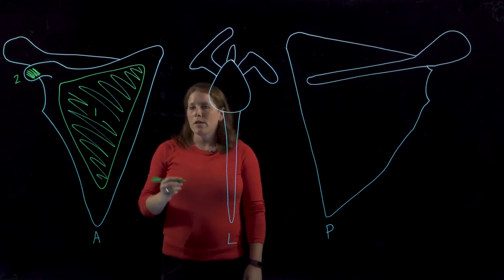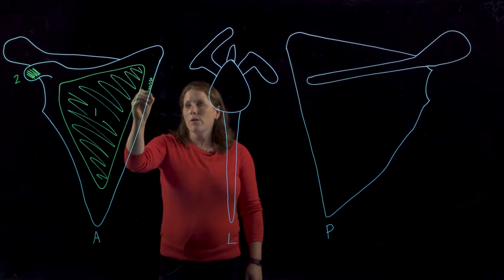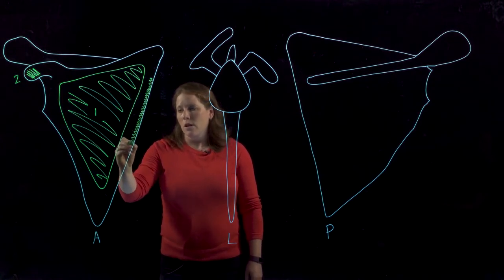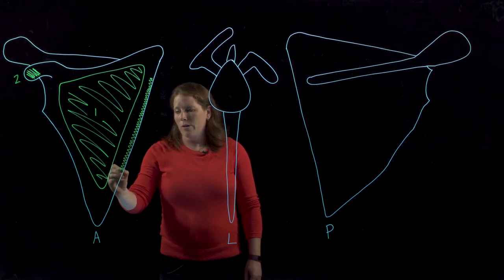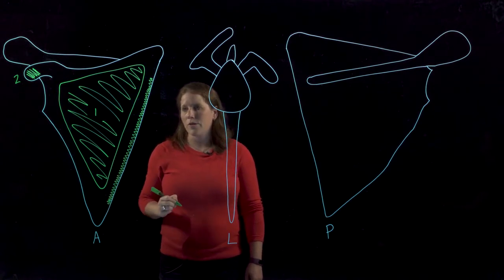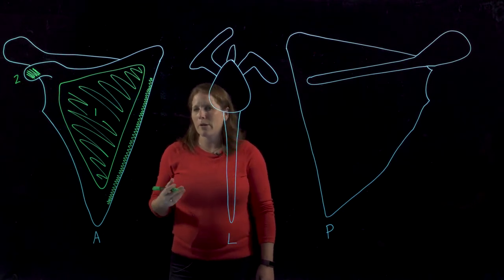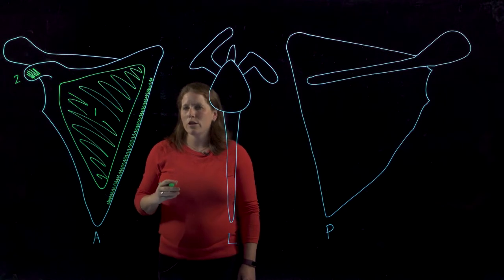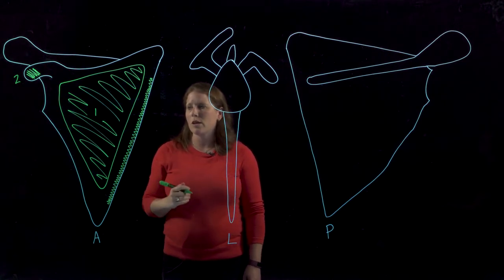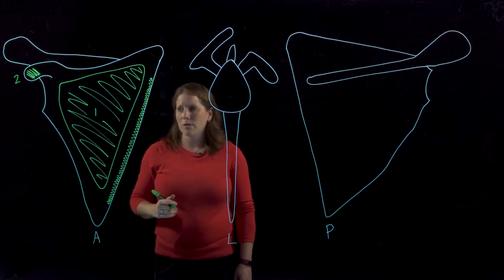The last muscle we'll look at on this surface attaches to this medial border on the anterior surface, all along this medial border, and this is where serratus anterior attaches. So it's always helpful to look at a three-dimensional skeleton model to appreciate the pathway that serratus anterior takes to reach this border—it's going to actually end up passing in front of that big subscapularis muscle.